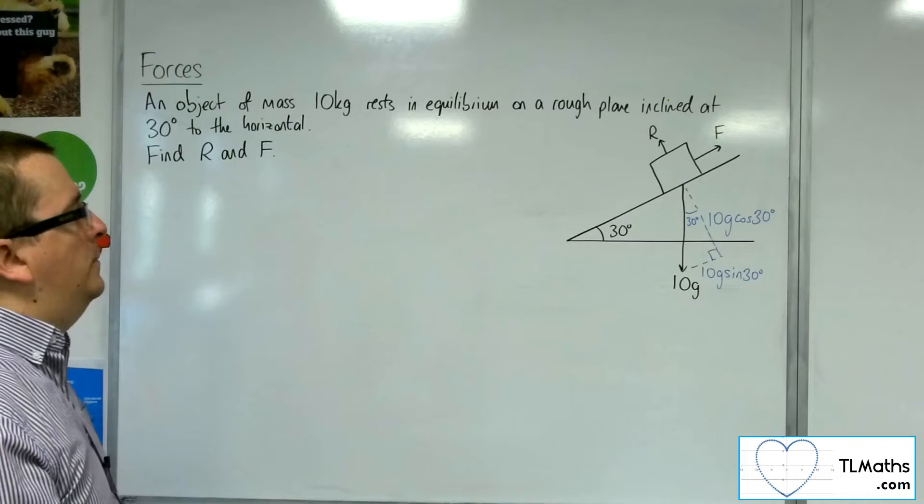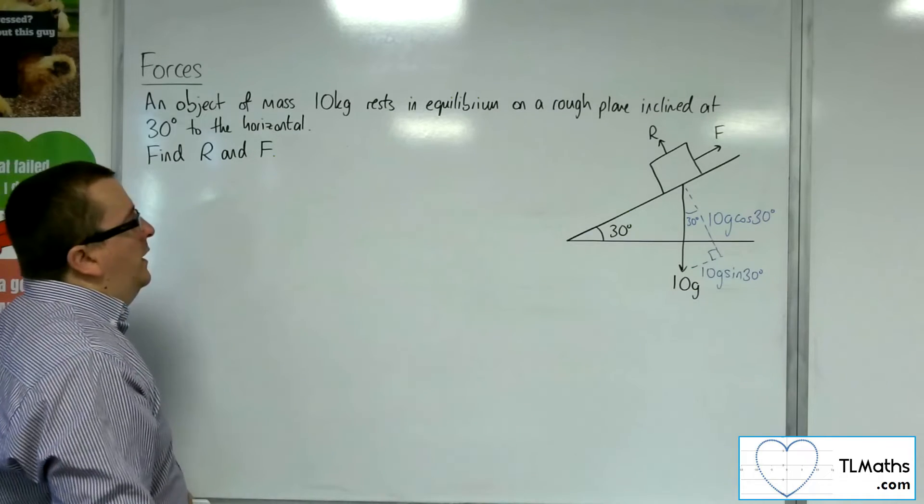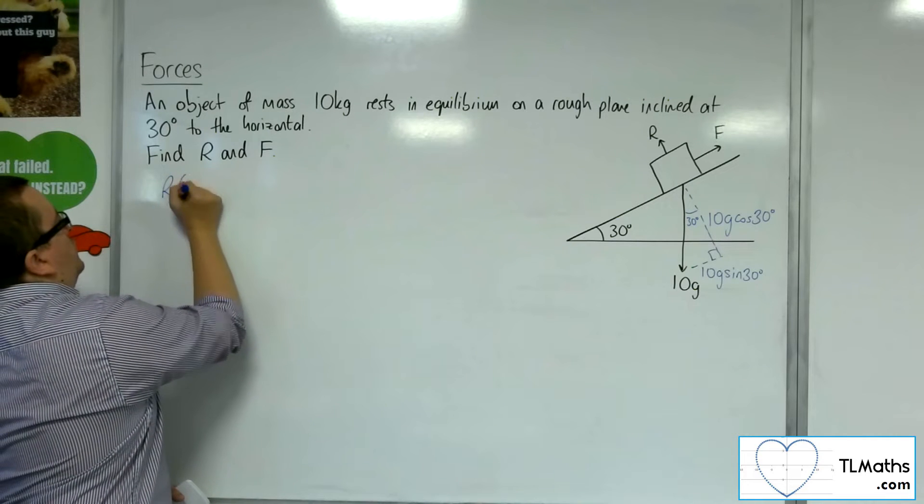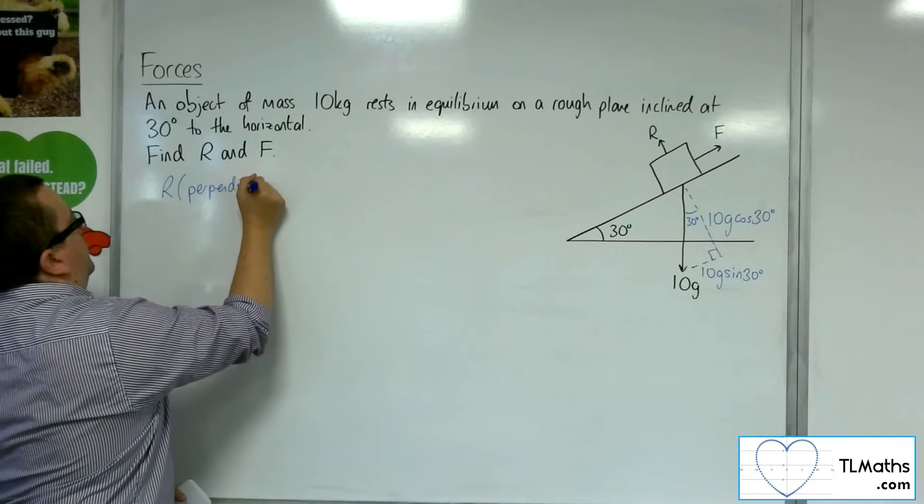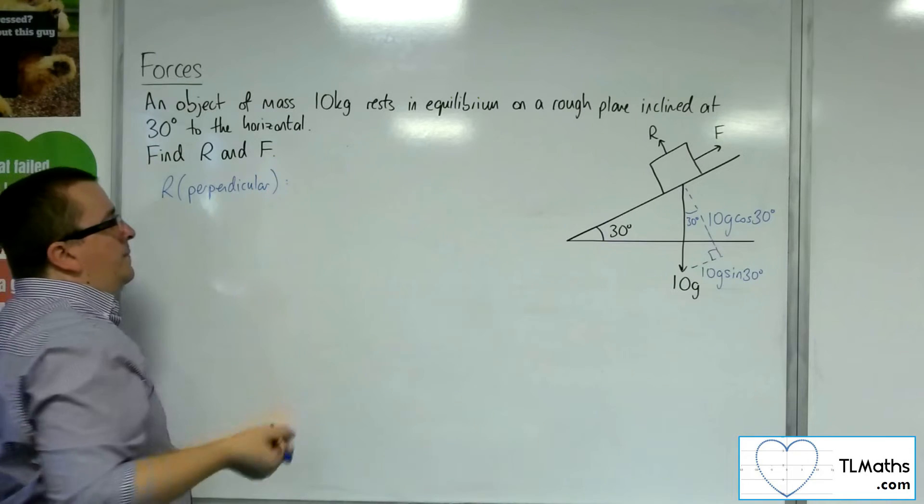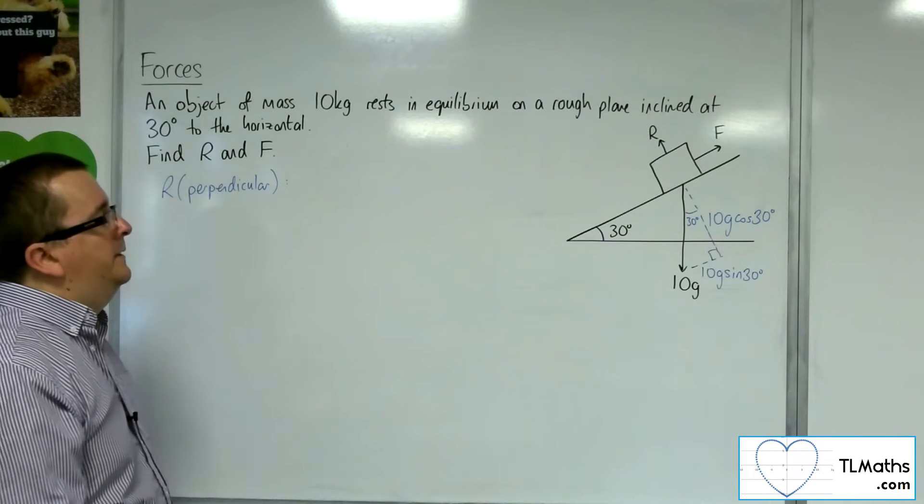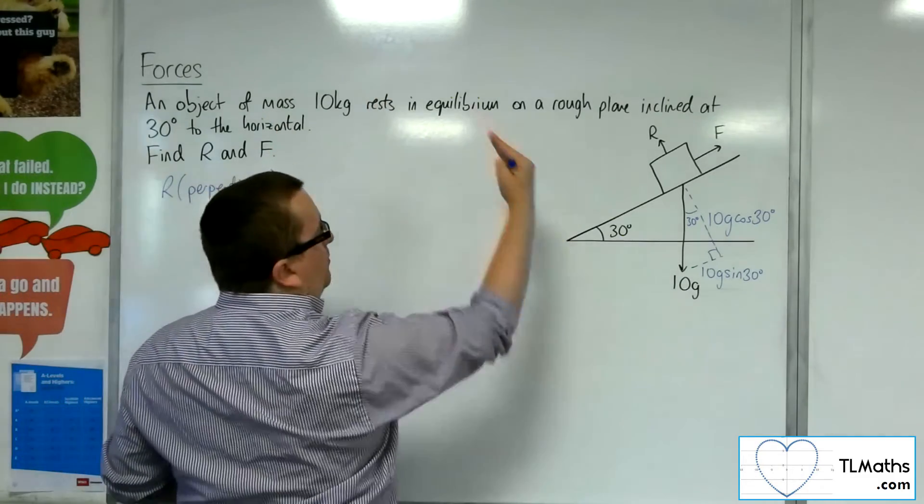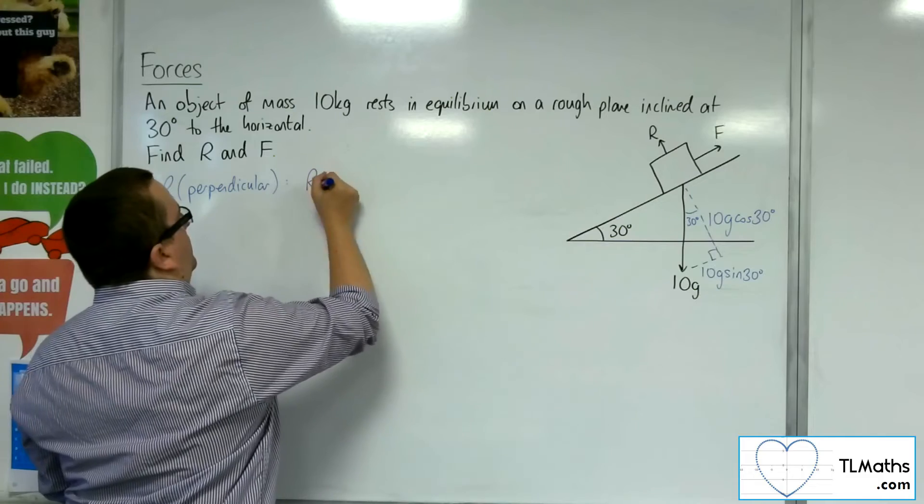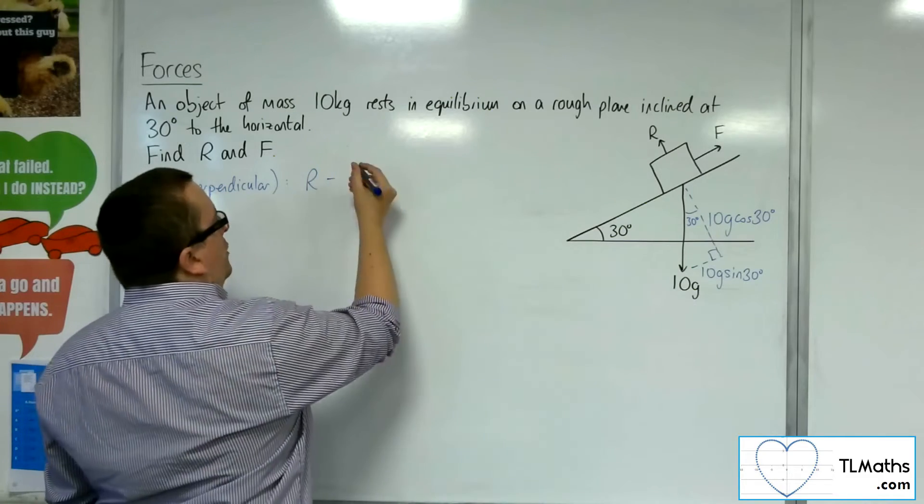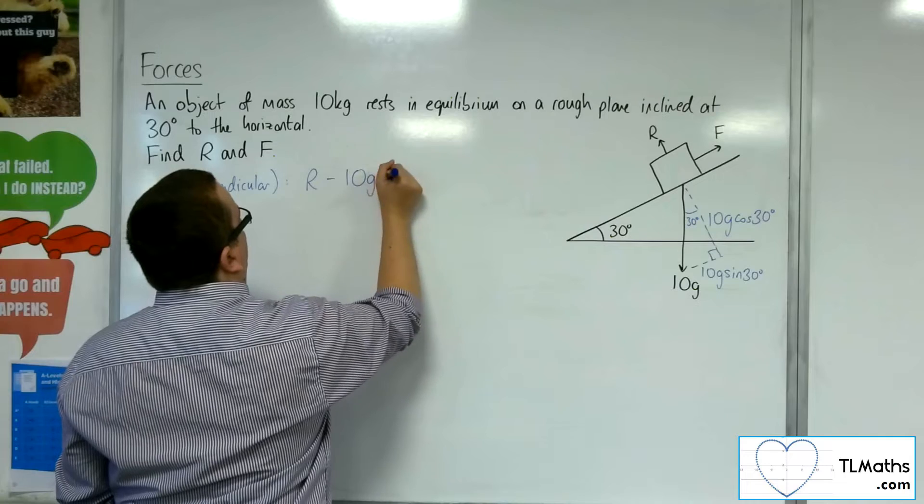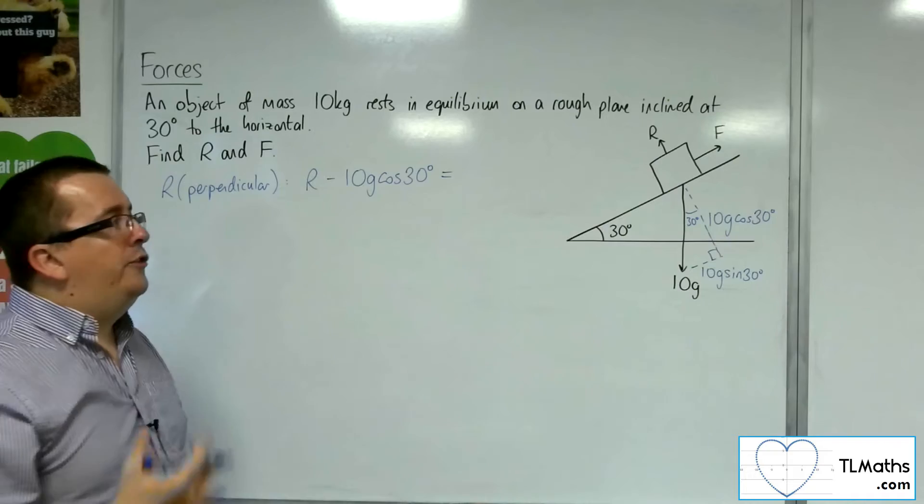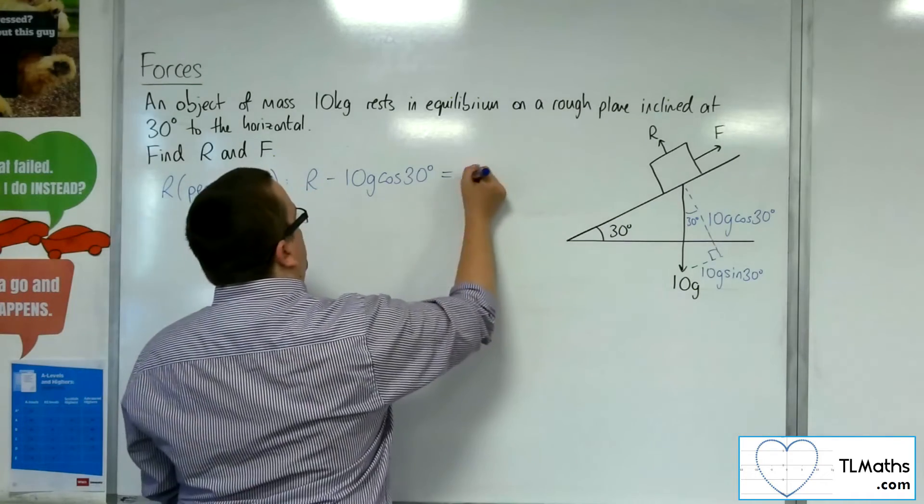If we resolve perpendicular to the plane first to find R, I'm going to take that way as positive. So we're going to have R take away 10G cos 30 is equal to the mass times acceleration. Well, it's not accelerating perpendicular to the plane, so that would just be 0.